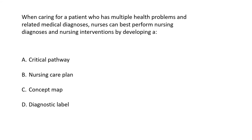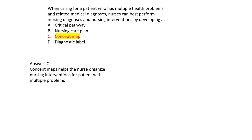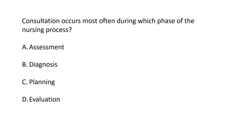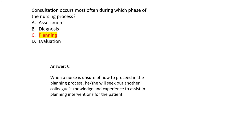When caring for a patient who has multiple health problems and related medical diagnoses, nurses can best perform nursing diagnoses and nursing interventions by developing: A. Critical pathway. B. Nursing care plan. C. Concept map. D. Diagnostic label. Answer C: Concept maps help the nurse organize nursing interventions for patients with multiple problems. Consultation occurs most often during which phase of the nursing process? Answer C: Planning — when a nurse is unsure how to proceed in the planning process, she will seek out a colleague's knowledge and experience to assist in planning interventions.